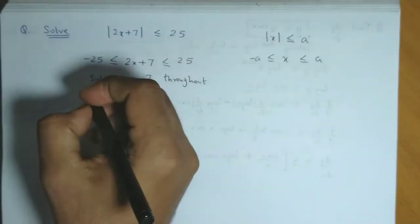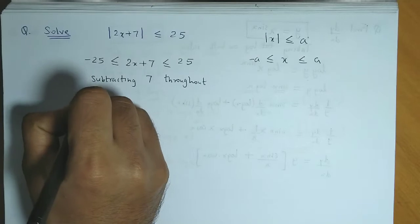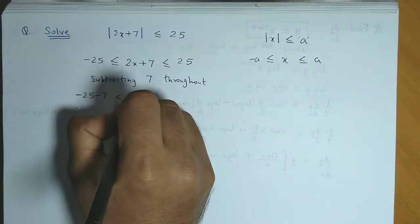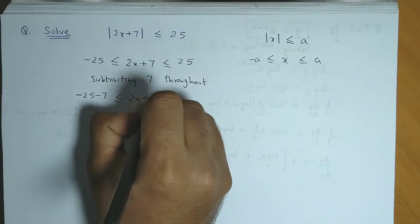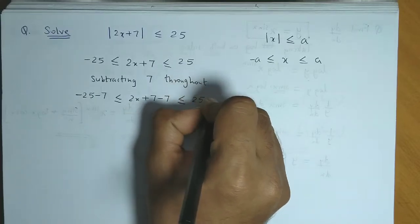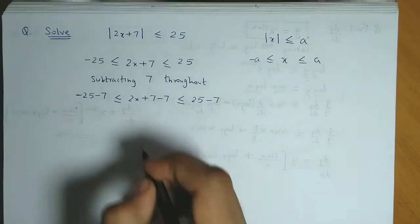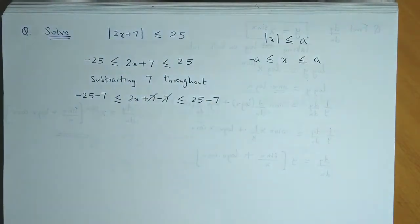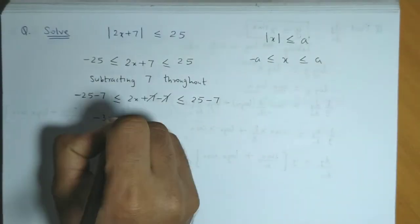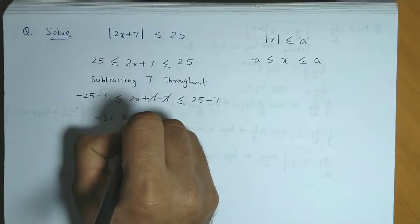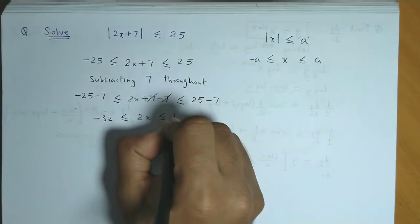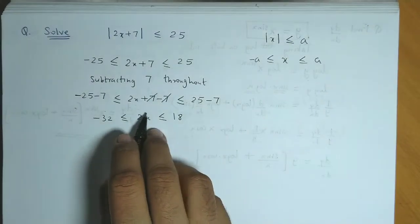So here we obtain minus 25 minus 7, less than or equal to 2x plus 7 minus 7, less than or equal to 25 minus 7. So this gets cancelled off. Now this becomes minus 32 less than or equal to 2x, less than or equal to 18.